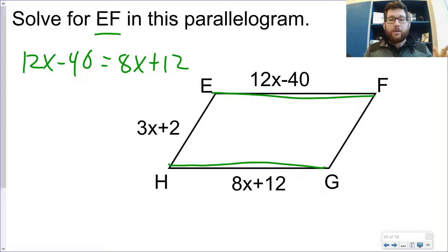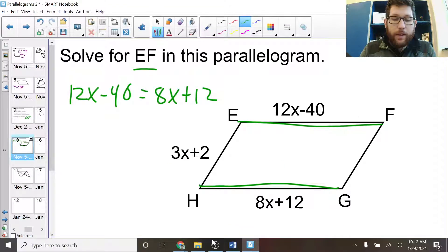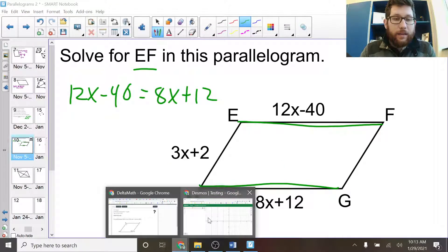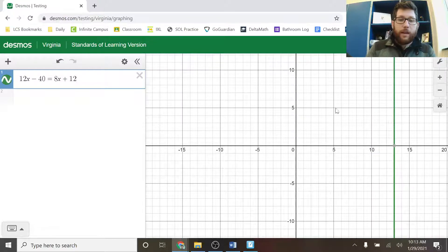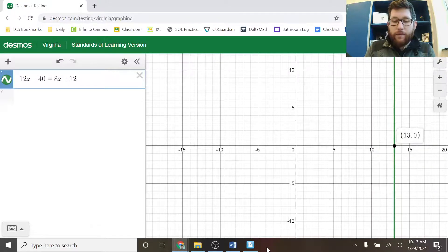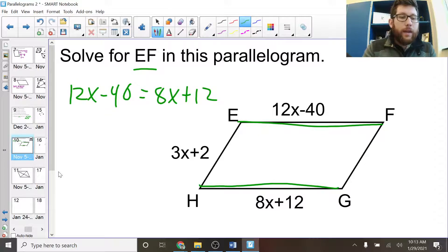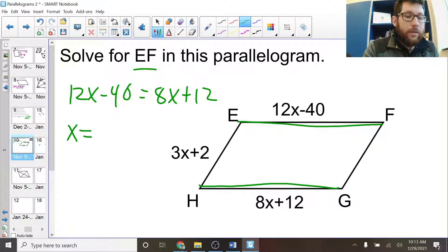So 12x minus 40 is equal to 8x plus 12. Let's go ahead and plug that into Desmos. You could solve it by hand. So I get 12x minus 40 is equal to 8x plus 12. And I get the answer of 13. So I know that x is equal to 13.